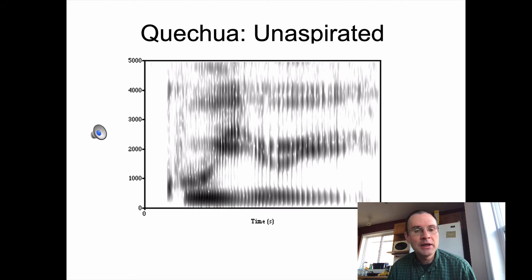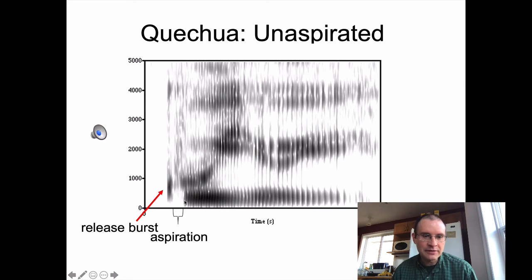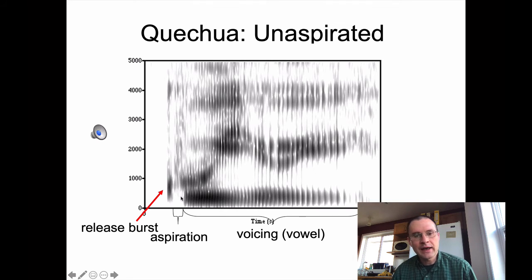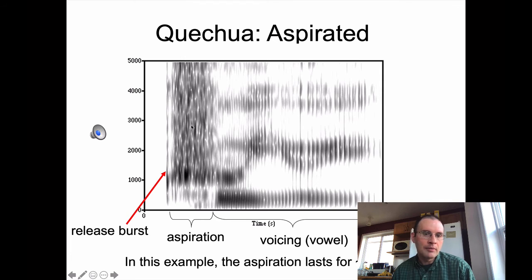Looking at the unaspirated stop — it's not completely unaspirated because we still see a release burst. It's velar, so we get a little peak of intensity in a particular frequency region and less intensity above it. Then there's a little bit of aspiration, which looks like the turbulent noise we saw for H when looking at fricatives. After that, we get voicing for the vowel with formants. In this case, the aspiration is about 35 milliseconds long — about 100 milliseconds shorter than the aspirated example. Aspiration is easy to spot in a spectrogram, just like sibilance.